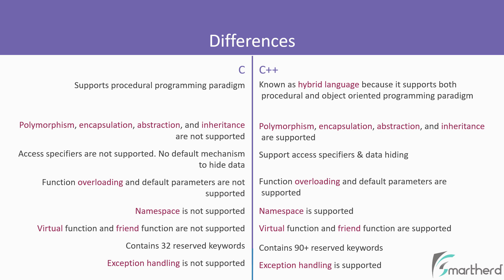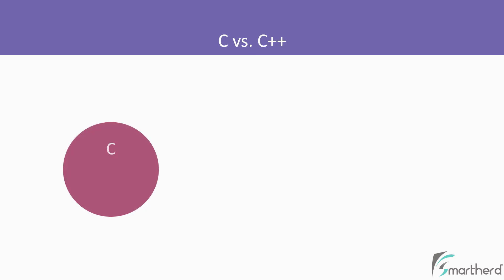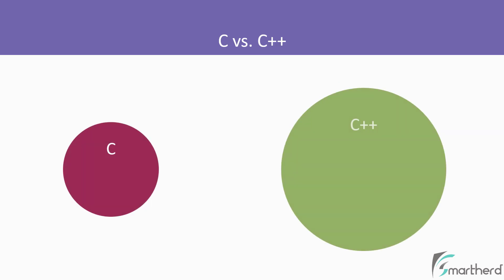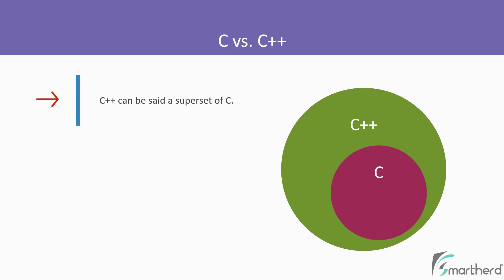Now looking at the differences, we can say that C and C++ are two different languages. But most of the features in the C language also exist in C++. That is why we generally call C++ as a superset of the C language. So please remember this.